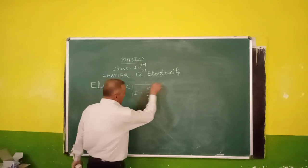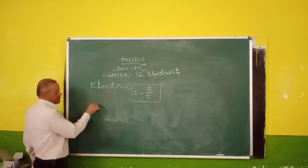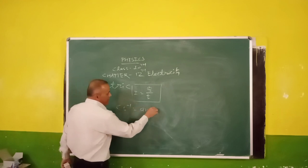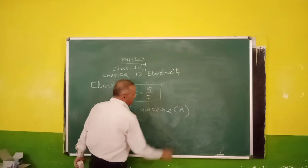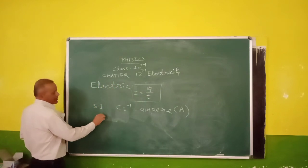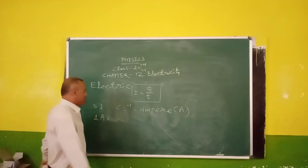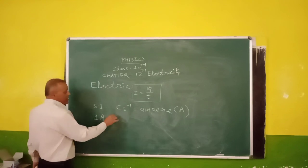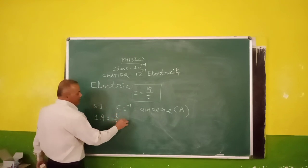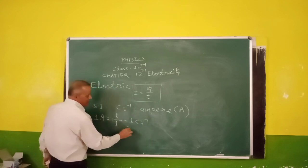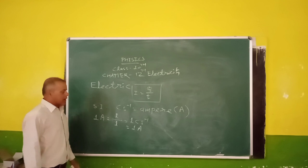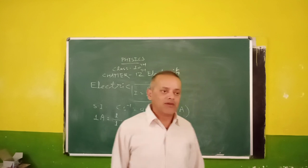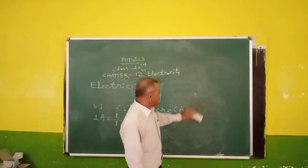Now we can find out the unit of electric current. The unit is coulombs per second, which is called ampere. We can define one ampere of electric current: if the value of Q is one coulomb and T is one second, then the current flowing through the conductor will be one coulomb per second. So current flowing through the conductor is said to be one ampere when one coulomb of charge flows through the conductor in one second. Remember, electric current is a scalar quantity.